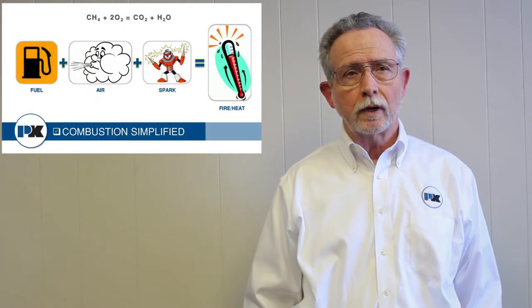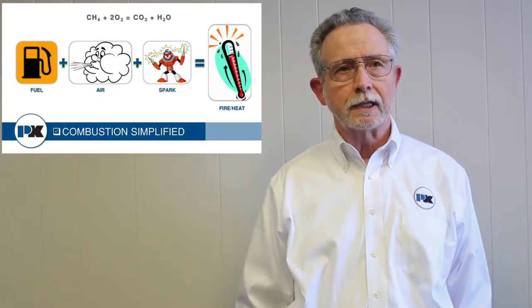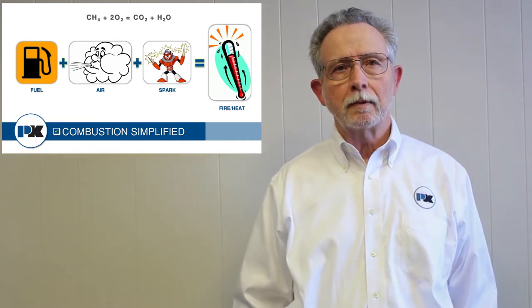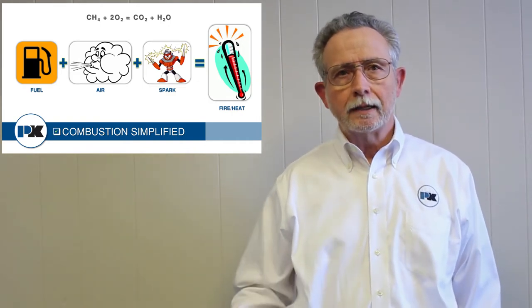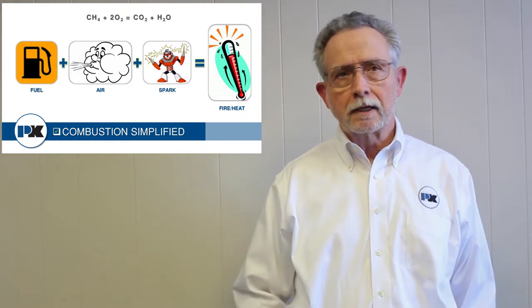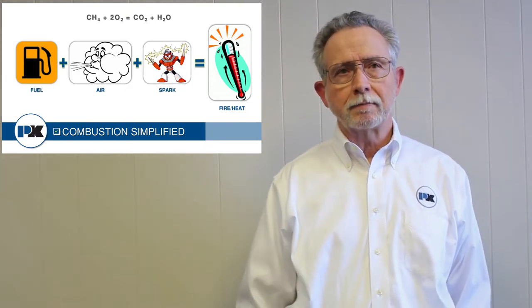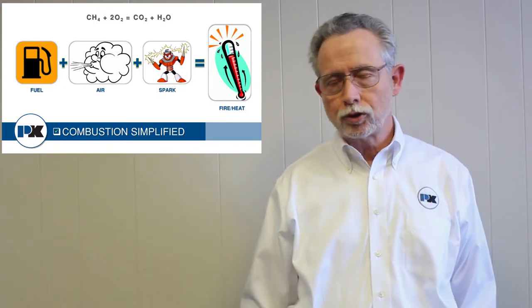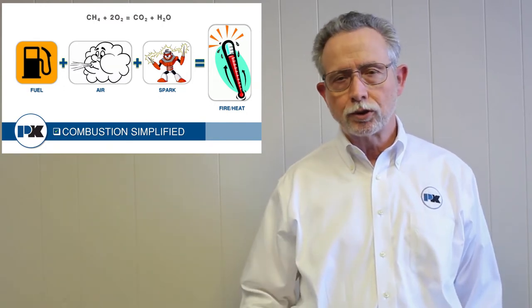First we're going to look at what's behind the turndown, and the first thing we need to understand is what is combustion. We're going to take fuel, add air, create a spark, and that gives us fire or heat. That's a very simplified version — basically natural gas plus a little O2 creates CO2 and water vapor.